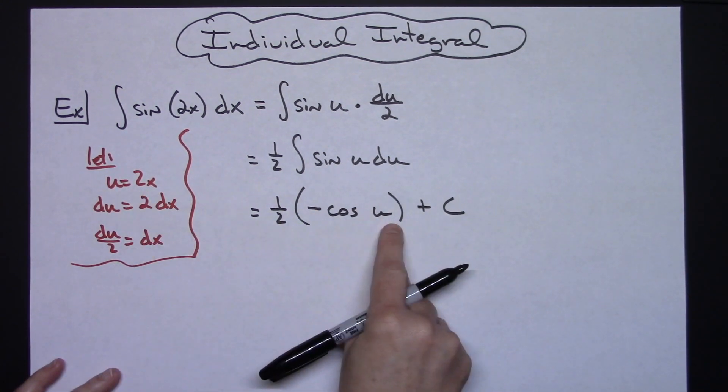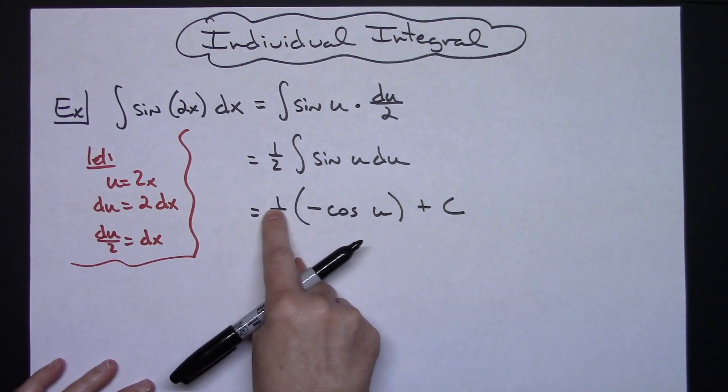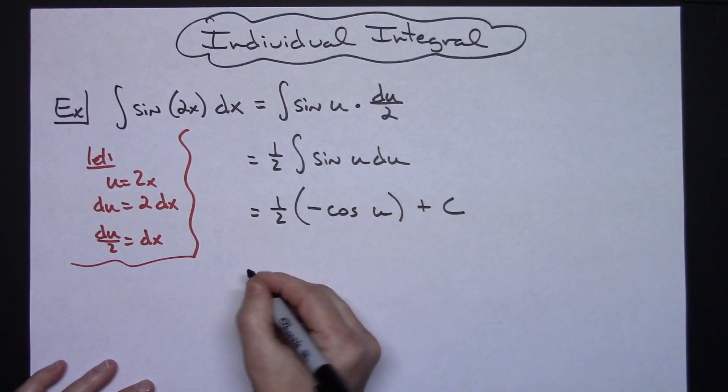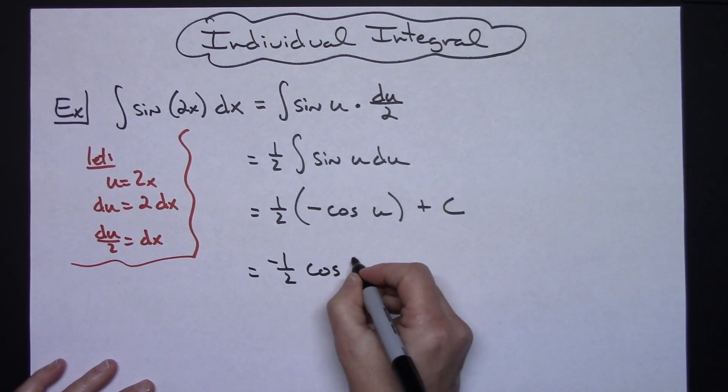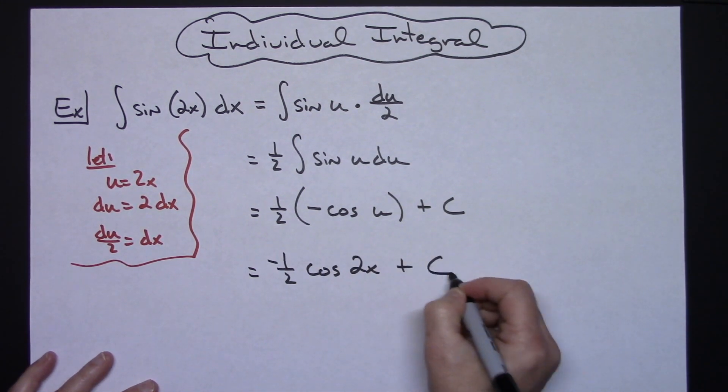And then your last step would be to replace u with what it equals. I am also going to pull out that negative out in front to make it look a little bit nicer. So we'll have a negative 1 half cosine 2x plus c.